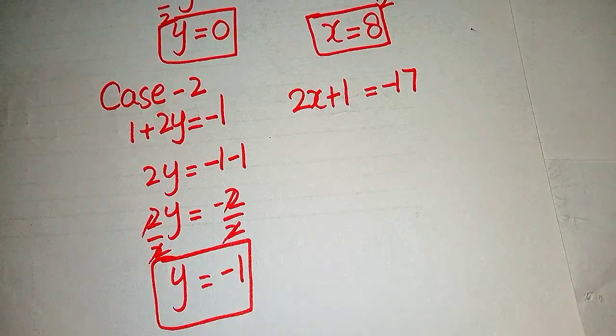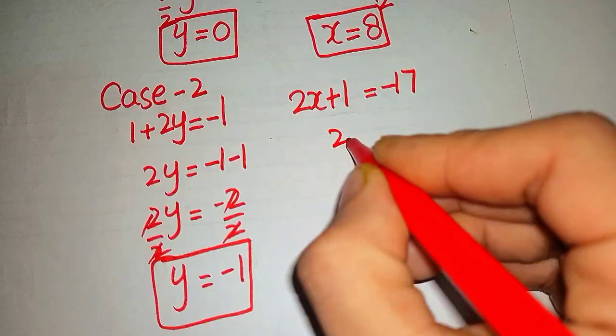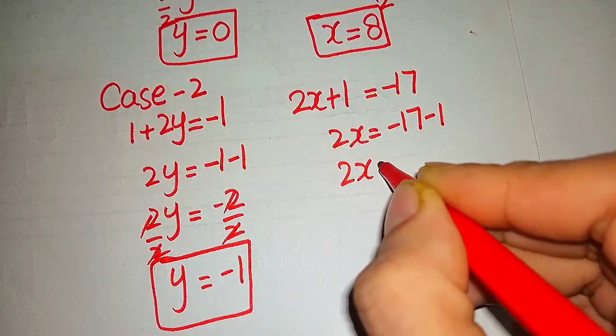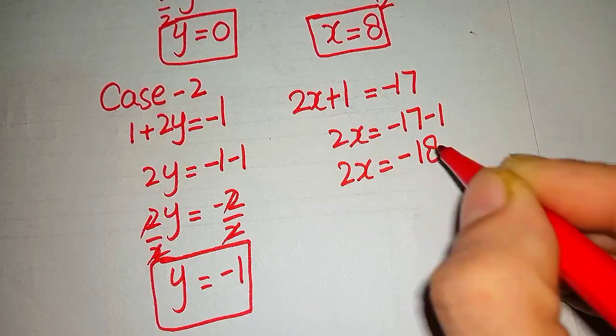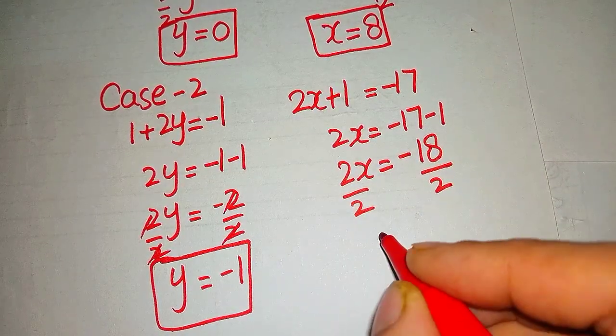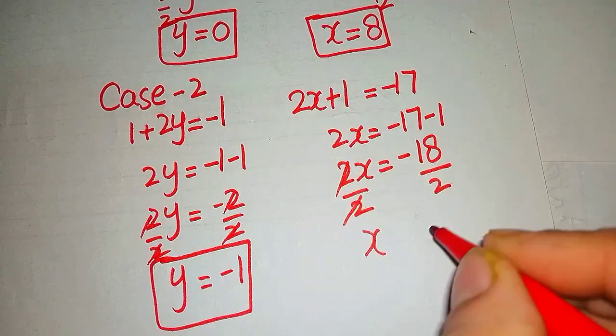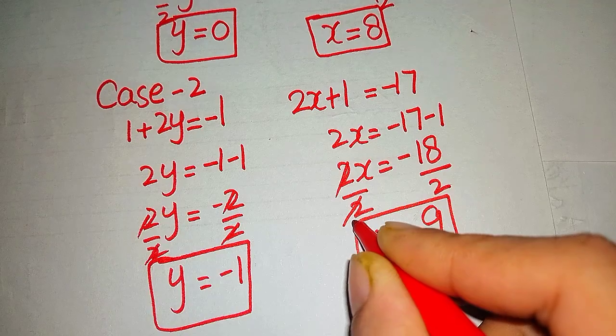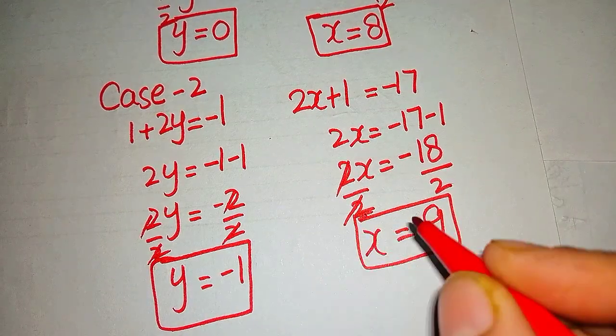Similarly on this side, 2x = -17 - 1, so 2x = -18. When divided both sides by 2, the value of x would become -9.